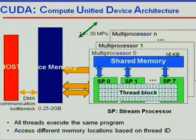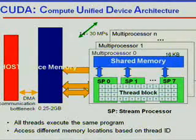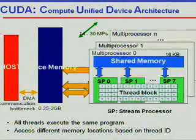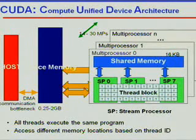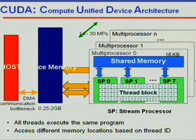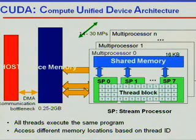The solution we provide is using the architecture called CUDA, which is invented by the company NVIDIA. In this architecture, we have a main memory called global memory, and we have many stream processors. Several stream processors are organized into multi-processors. There is also a shared memory within these multi-processors for access by each stream processor. All threads can execute the same program, and each stream processor can access different memory locations based on the thread ID.